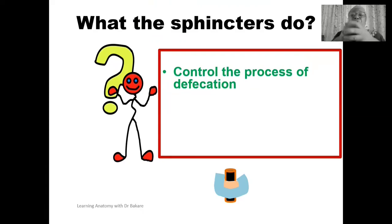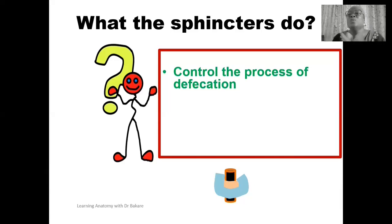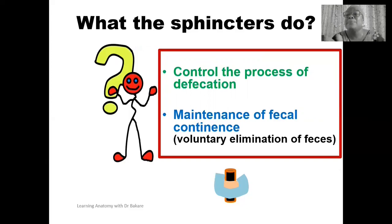The sphincters can decide to either contract or relax. When they contract, they prevent the passage of feces through the lumen of the anal canal. When they relax, there is allowance for passage of feces through the anal canal lumen. They also maintain fecal continence, which means they allow for voluntary elimination of feces, preventing uncontrollable release.